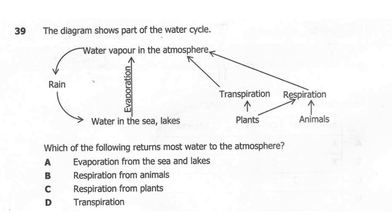Question 39. The diagram shows part of the water cycle. Which of the following returns most water to the atmosphere? A: evaporation from the sea and lakes. B: respiration from animals. C: respiration from plants. D: transpiration. The correct answer here is A. We are going to have more water lost from the sea as well as lakes as evaporation takes place.